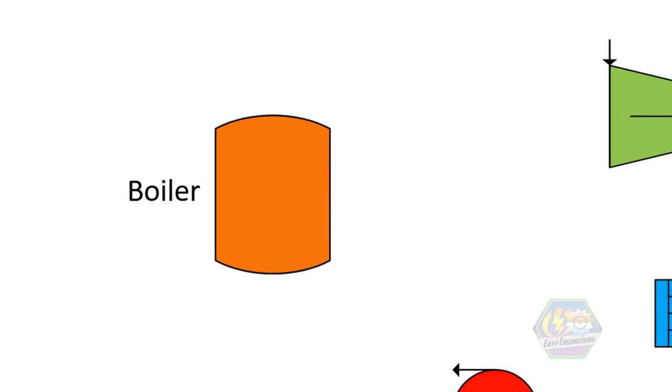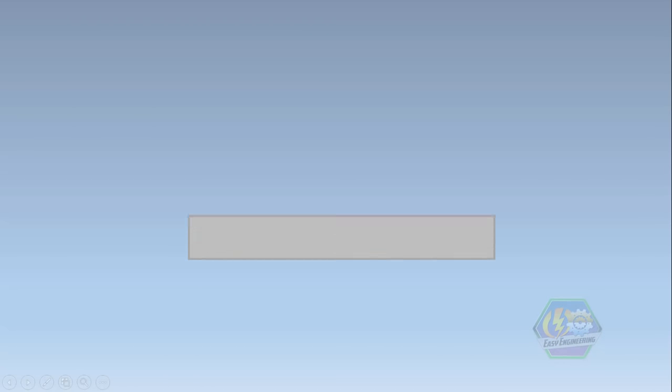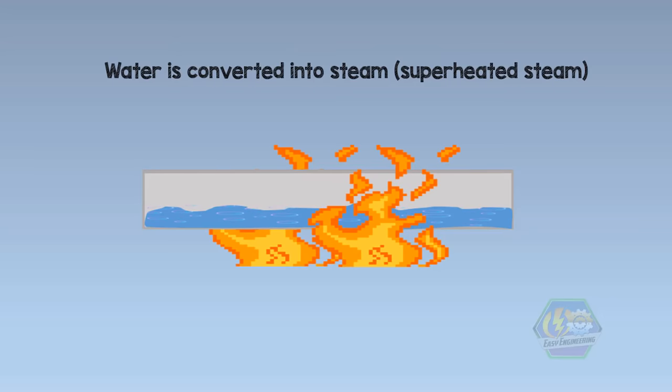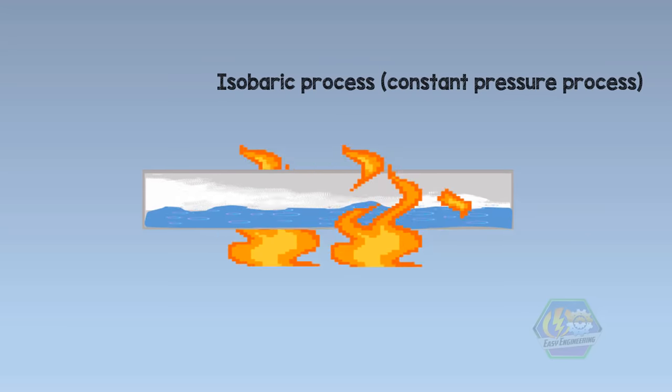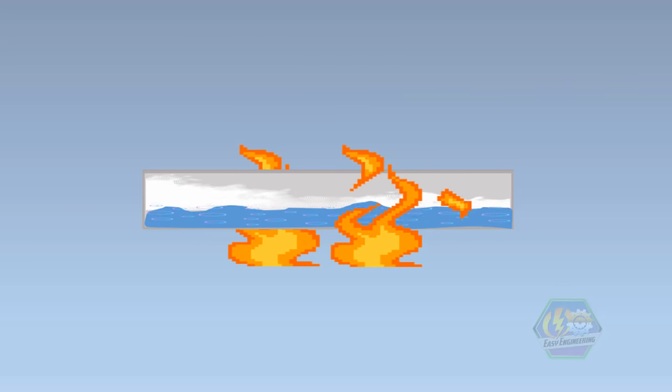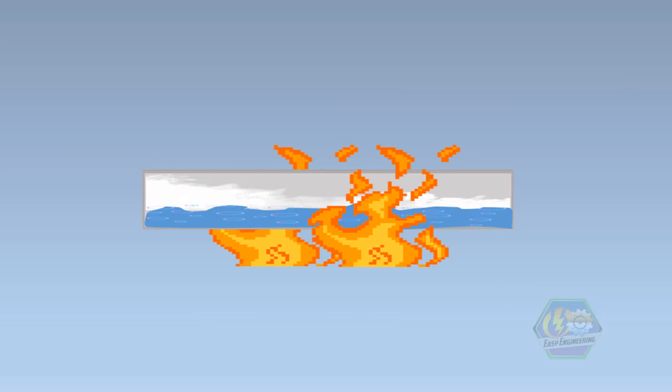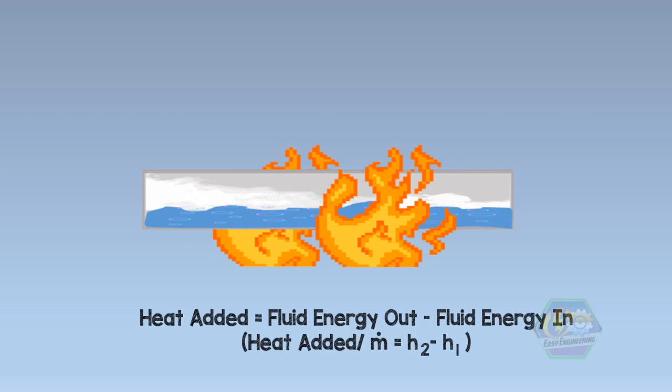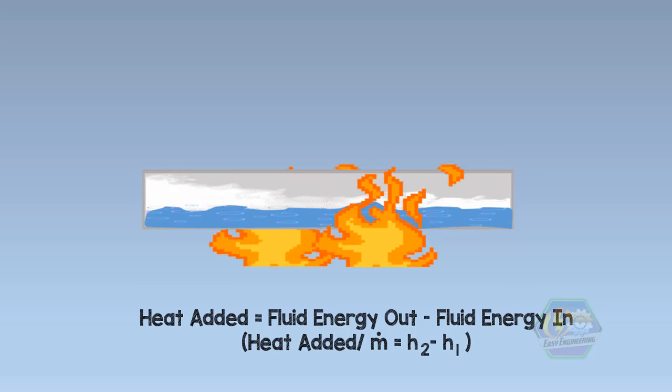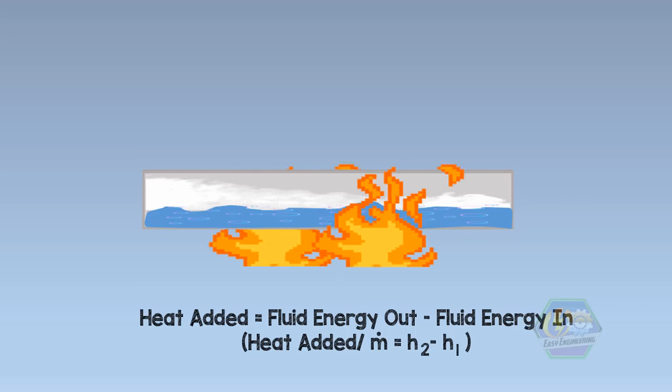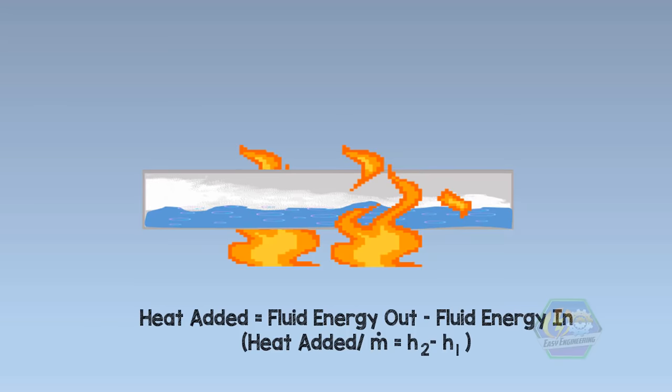For process 1 to 2 boiler, these are the things that we need to remember. Since boiler is a heat exchanger equipment, heat is added into the boiler through a fuel, which may be coal, oil, or natural gas. Here, water is converted into steam or superheated steam. This is an isobaric process or a constant pressure process. The temperature and entropy for this process increases. And we can solve the heat addition by using the formula: heat added equals fluid energy out minus fluid energy in, or enthalpy out minus enthalpy in for the boiler. Note that this equation is formed by using a mass and energy rate balance for a controlled volume at steady state, neglecting pressure drop. So, those are the important things that we should remember with understanding the boiler process.